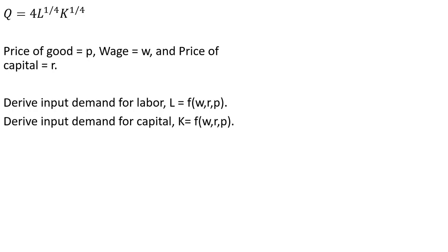We're going to have the price of the output good equal P, the wage equal W, and the price or rental rate of capital equal to R. Our goal is to derive the input demand for labor, where labor is a function of the wage, price of capital, and the price of the good itself. We're also going to derive the input demand for capital, where capital is a function of the wage, price of capital, and the price of the output good.